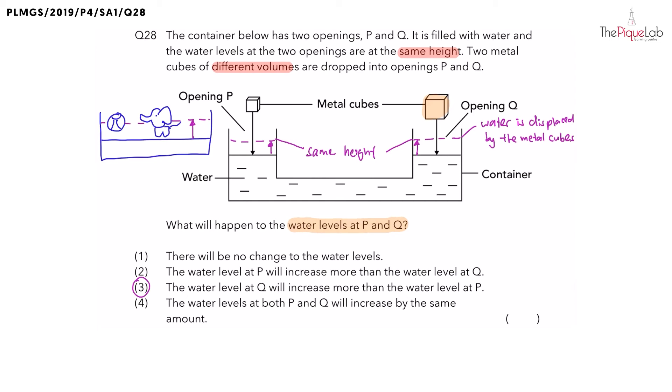And why can the metal cubes displace the water? It is because when the metal cubes are dropped into the container, they will both occupy space in the container. So, let's write that down. The metal cubes occupy space in the same container.